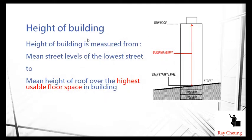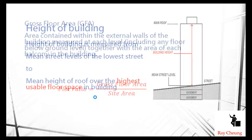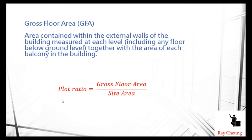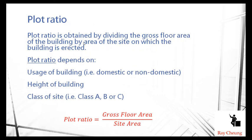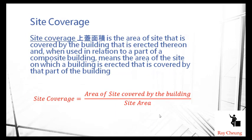You also need to understand the term 'height,' which is measured from the mean level of the street to the main usable floor area. For a podium home, we do not measure the area above — only the usable floor area counts. Another term is 'plot ratio,' which equals the gross floor area divided by the site area. Based on the building planning regulations, you can calculate how many floor areas you are allowed to build for your site.